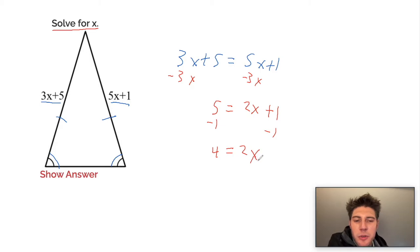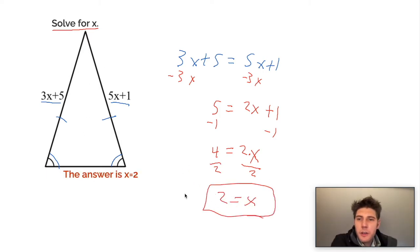And now this means 2 times x. So the way I'm going to undo that is divide both sides by 2. And we get x equals 2 is the answer. And we can check it. So we got this one right.